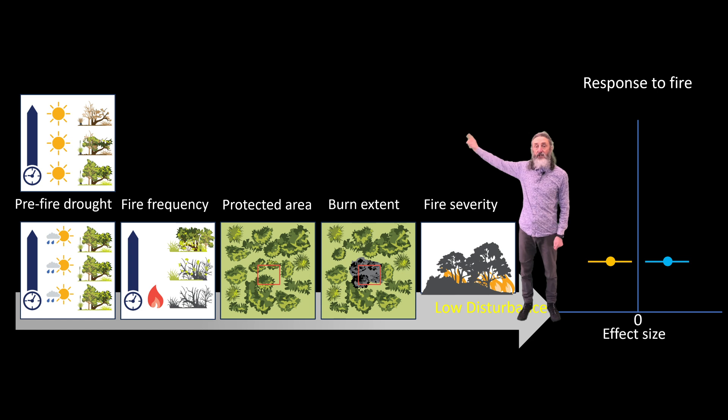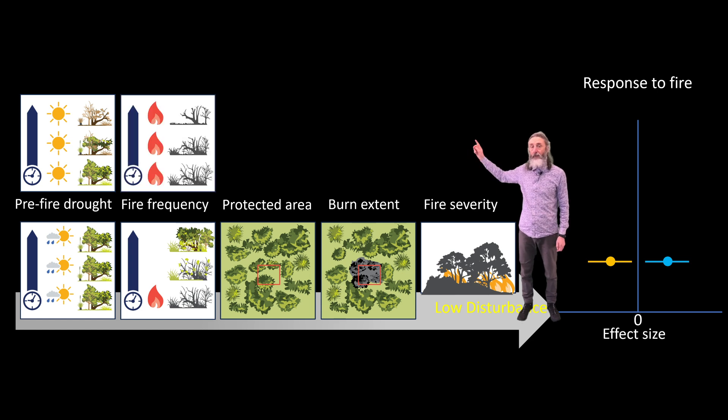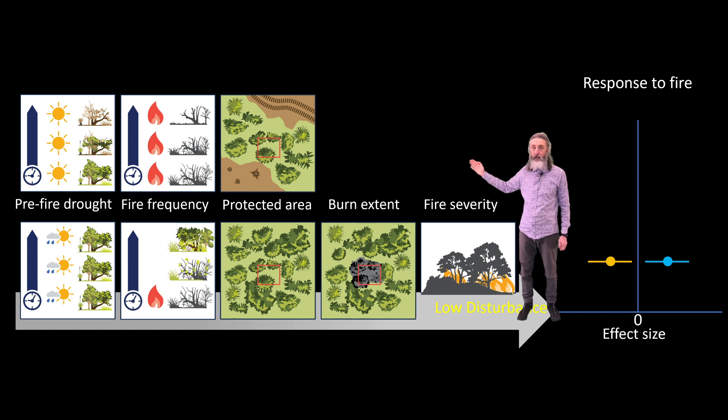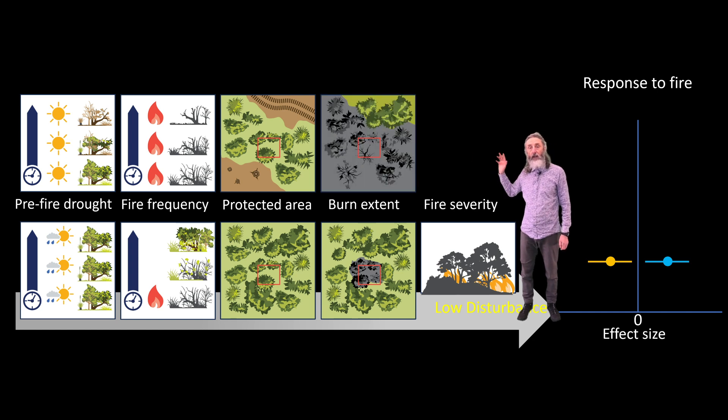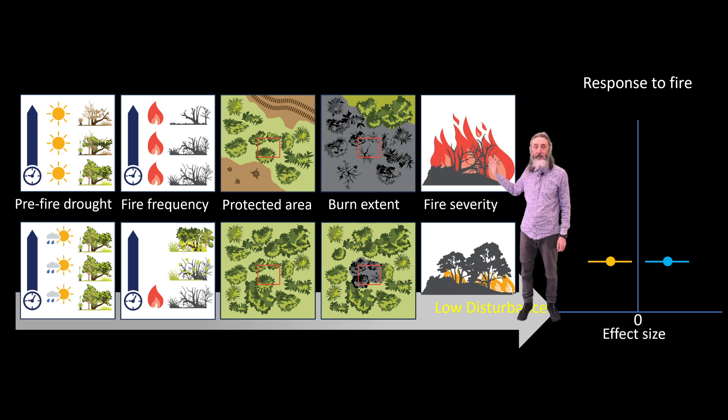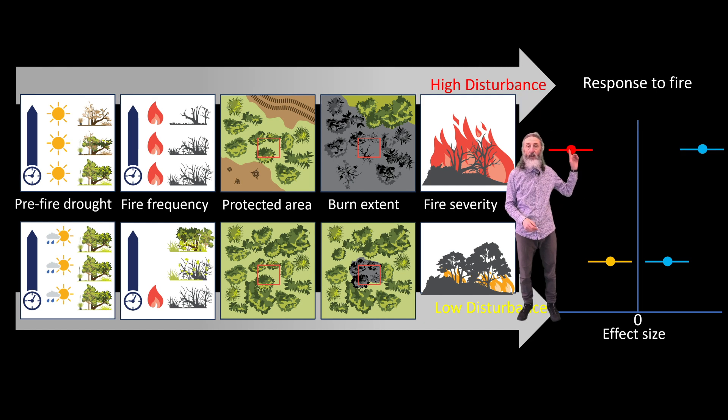On the other hand, if drought was extreme before the fire, if fire frequency was high or fires were recent, if much of the surrounding land was not in a conservation reserve, if extensive areas around the site had been burnt or if the 2019-20 fire burnt at high severity, then responses were larger. We saw both larger declines and larger increases.